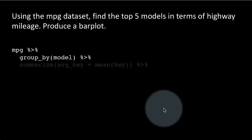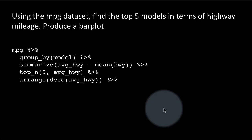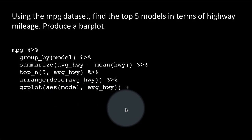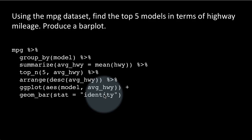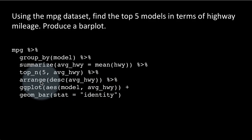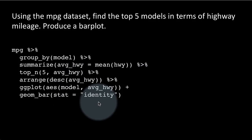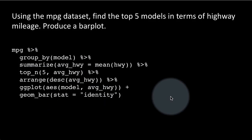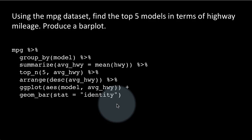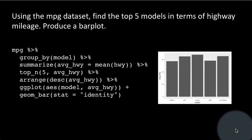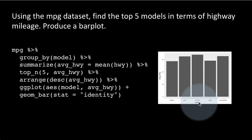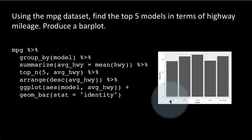It's exactly like before — we do the pipeline and simply pipe the result to ggplot. ggplot with aes(model, average_highway) and geom_bar with stat equals identity. Why are we saying stat equals identity? That is because our calculation with top_n has already given us the model name as well as the highway mileage. Normally a bar plot calculates the count of each value, but this time we have everything — all we want the bar plot to do is just the plotting. So we say stat equals identity and it gives us the result.